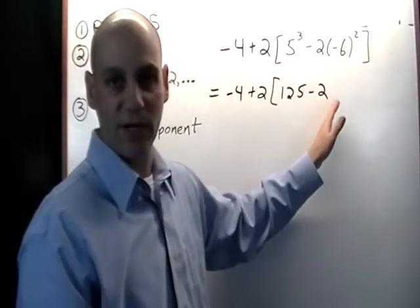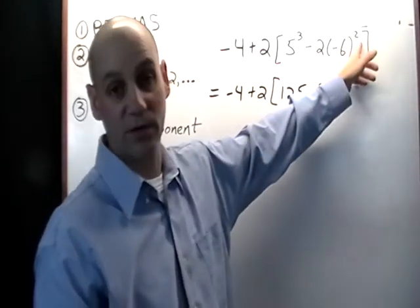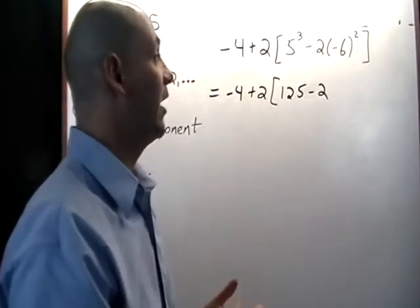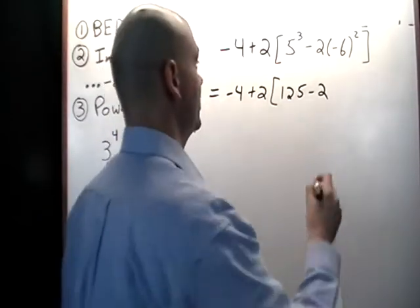And the next thing we're going to do is leave the minus 2 alone and calculate this exponent here, negative 6 squared. And that would be negative 6 times negative 6, and that's going to be 36.